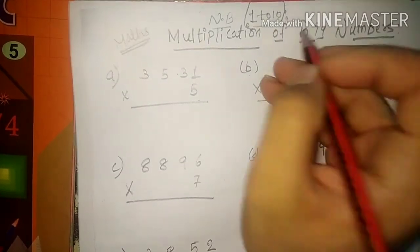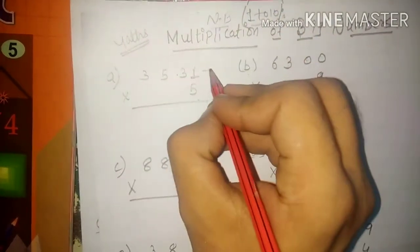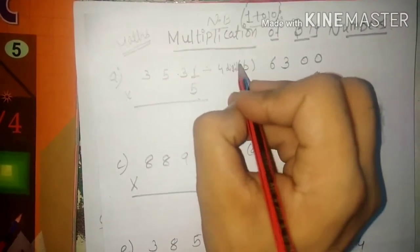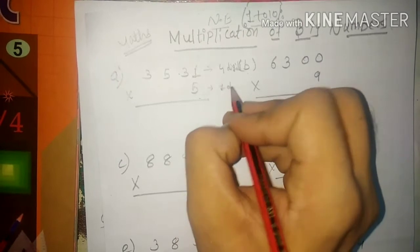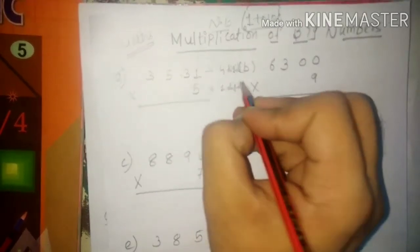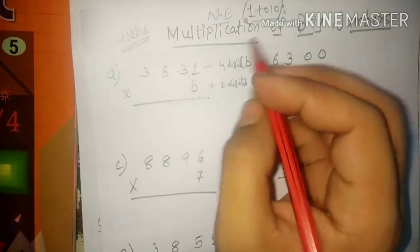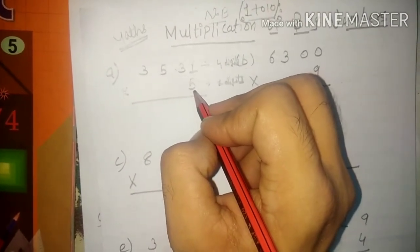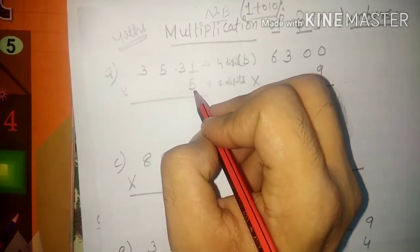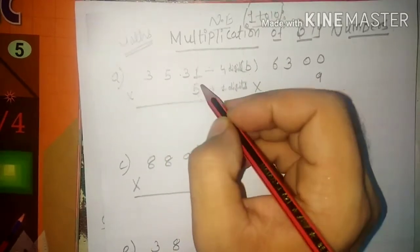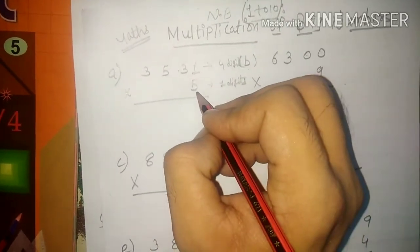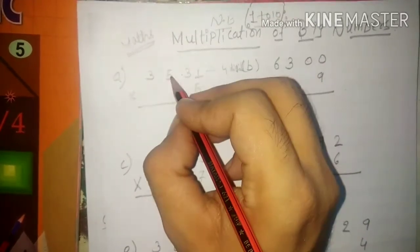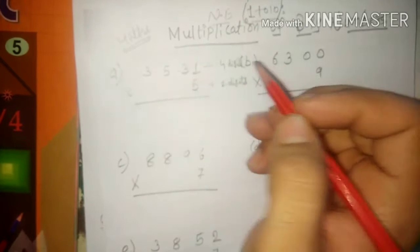Today we will learn the multiplication of big numbers, which means on the upside I have been given 4 digits and on the downside 1 digit. So how will we do this? We will start from the back side. Always multiplication, addition, subtraction, division — we do it from the back side. The number given here is 5. I have to multiply first 5 with 1, then with 3, then with 5, and then at last with 3.